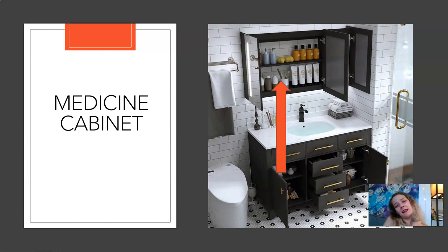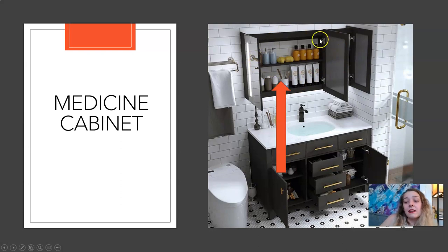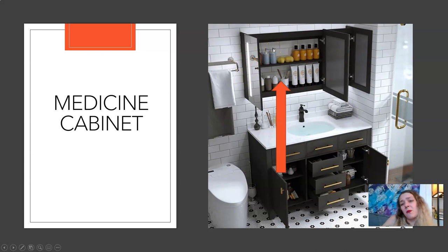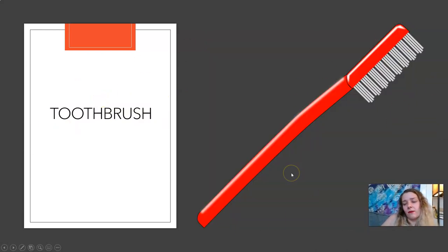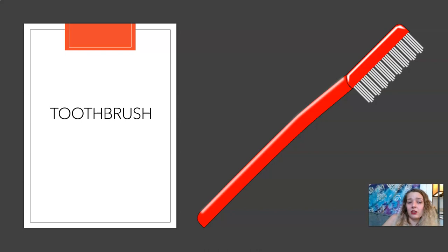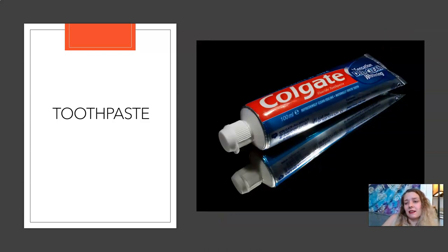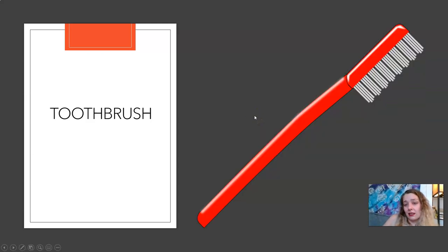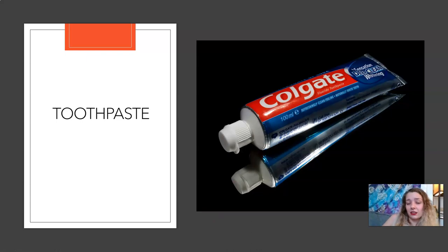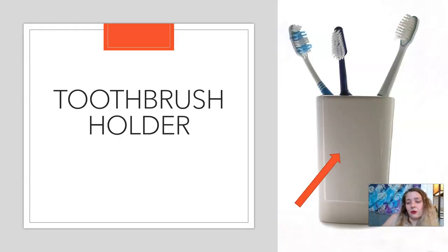Medicine cabinet. A medicine cabinet is above the sink. Usually there is a mirror in front of it. You can put shampoo, medicine, your toothbrush in it — but typically it's for medicine. Toothbrush. You use a toothbrush to brush your teeth. Toothbrush. Toothpaste. You use toothpaste and a toothbrush to clean your teeth.